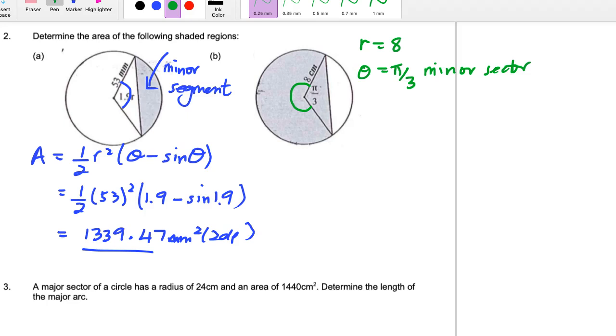Second thing, I'd like you to have a look at question 3, saying that a major sector of a circle has a radius of 24, and that major sector has an area of 1,440 square centimeters. Knowing that, can you determine the length of that arc? So length of an arc is just r times theta. But of course, we're going to have to know our angle theta in radians. So we'll debrief on those two questions in our upcoming lesson.